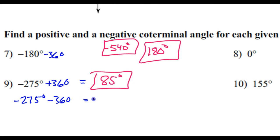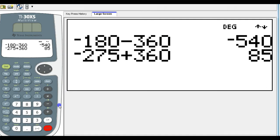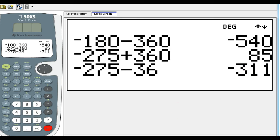There's our positive. Now, how about negative 275 minus 360? Negative 635.